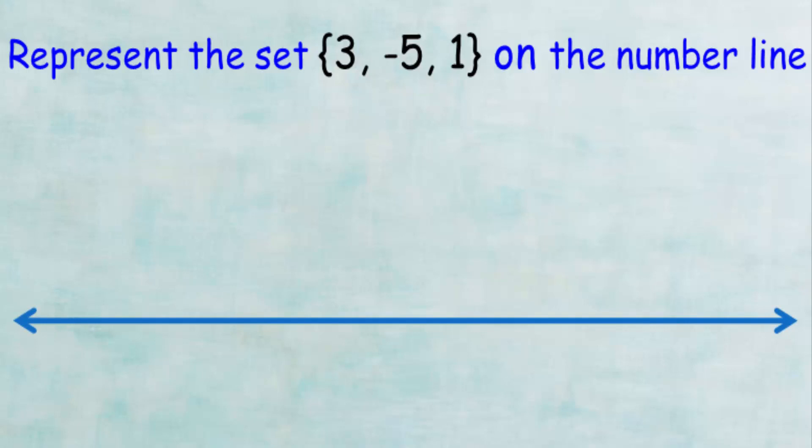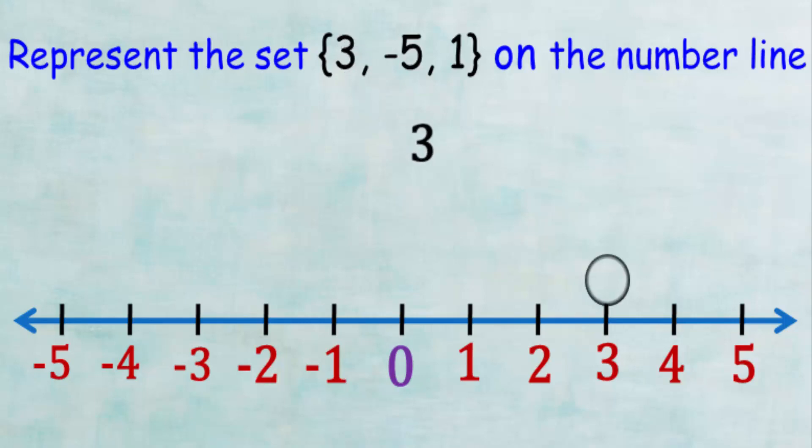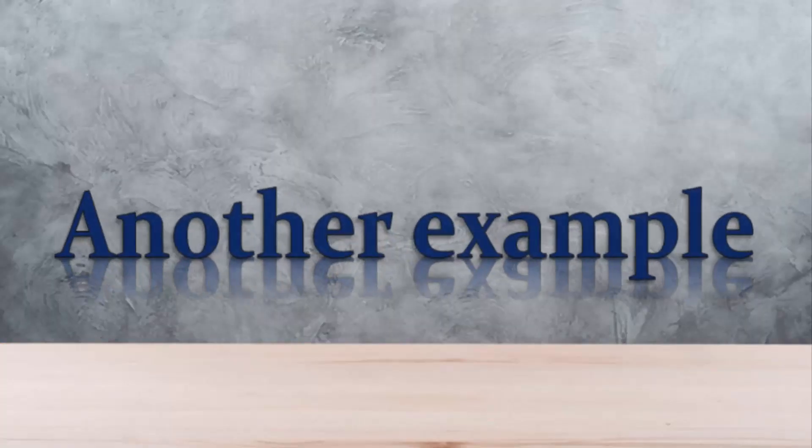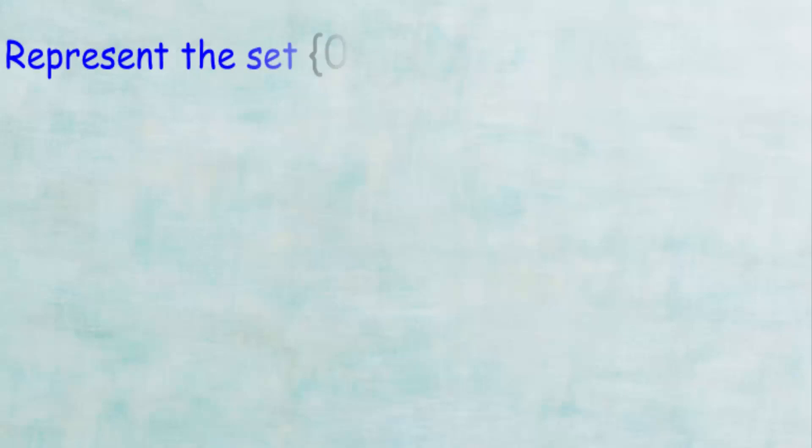After drawing the number line, we put a circle around the numbers 3, -5, and 1 as shown on the screen. Let's see our last example. We want to represent the set of numbers 0, 2, 4, and so on.